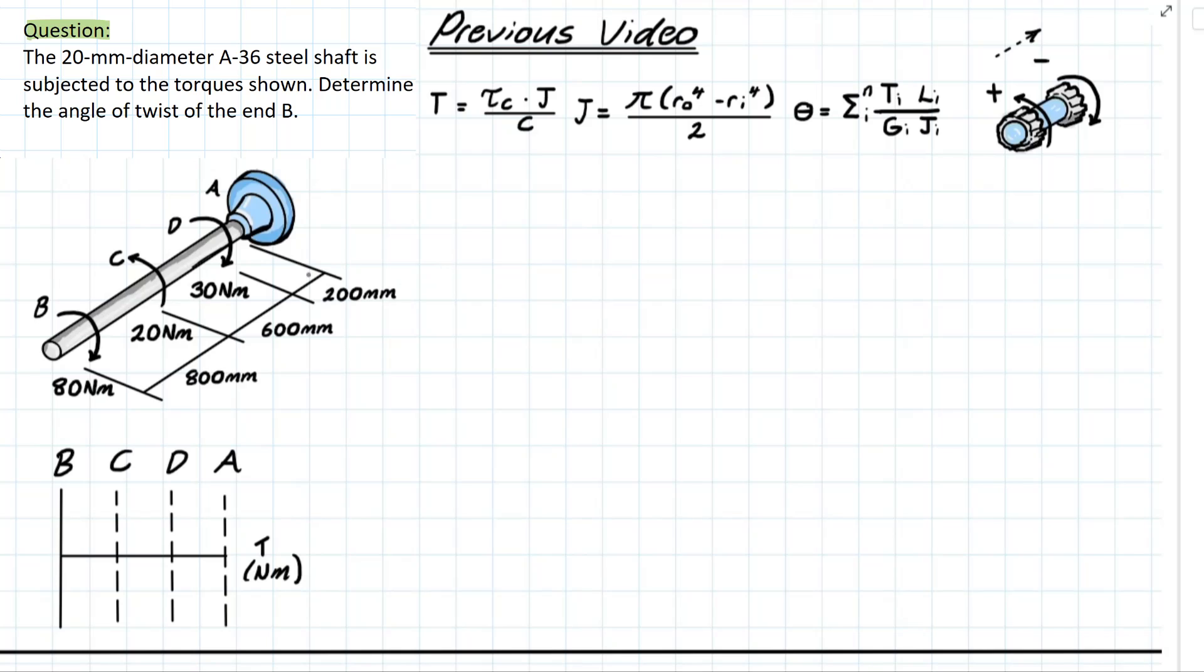Alright so let's solve this problem. We're looking at a 20 millimeter diameter A36 steel shaft which is subjected to torques as shown and it wants us to determine the angle of twist at point b.